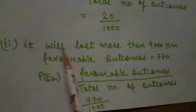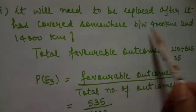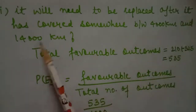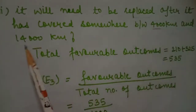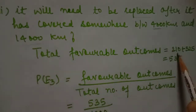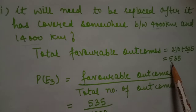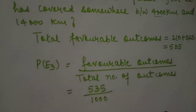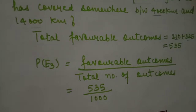Part 3: probability that the tire needs replacing between 4000 and 14000 km. The relevant frequencies are 210 (4000–9000 km) and 325 (9001–14000 km). Total favorable outcomes = 210 + 325 = 535. P(E3) = 535/1000.